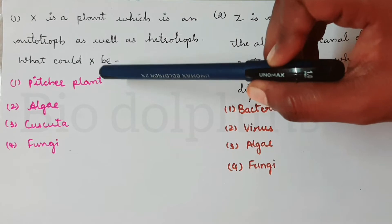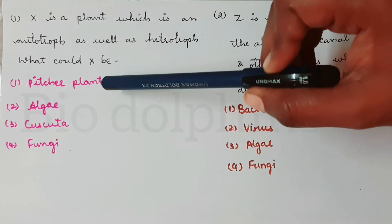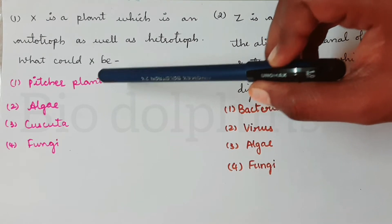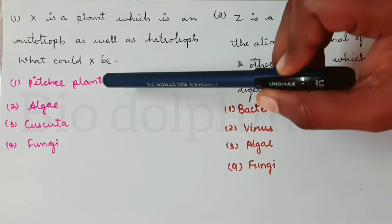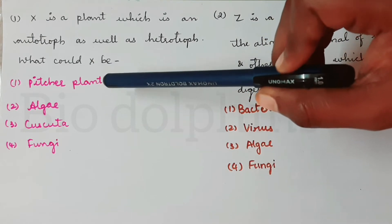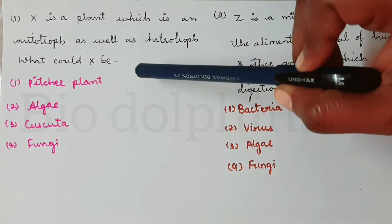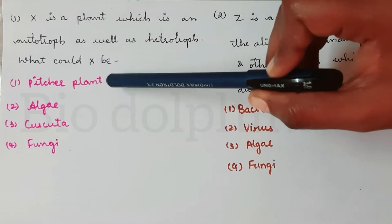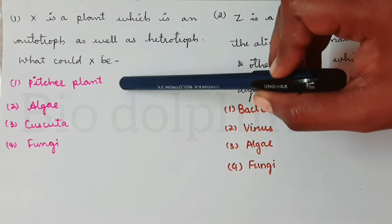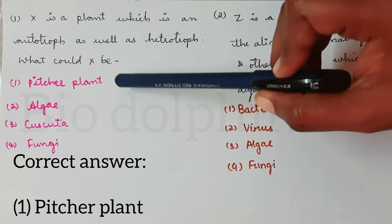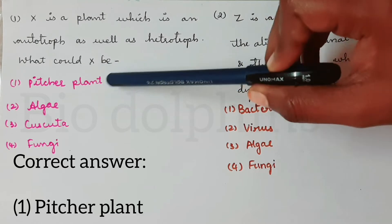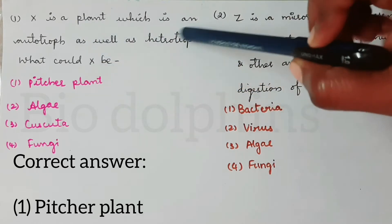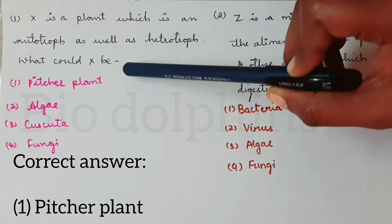Pitcher plant is an insectivorous plant — it depends on insects, making it heterotrophic. But it also has chlorophyll and can prepare its own food. So the Pitcher plant is both autotroph and heterotroph. That is the correct answer.